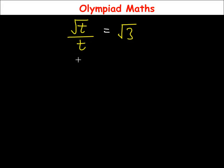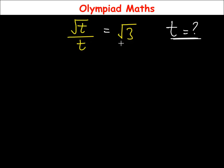Hello everyone, welcome. In this video let us solve this question. We have √t over t is equal to √3, and we are to solve for the value of t that will satisfy this given equation. t is the unknown we are to solve for.